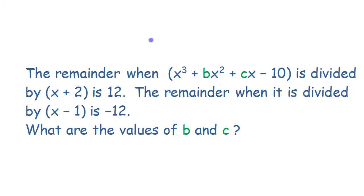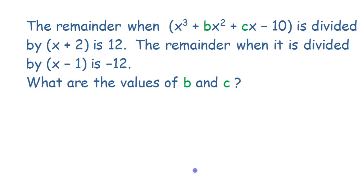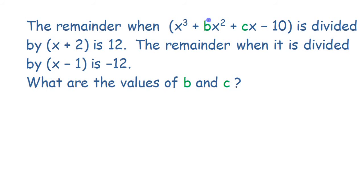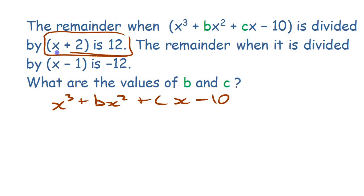Lastly, let's do a more difficult problem where you're working backwards. You're missing some coefficients in the original polynomial, but you're given the remainders for two different divisions. How can we find those two missing coefficients? Using the Remainder Theorem, you can write two equations — one for each division. If you have two equations and two unknowns, you can solve them together as a system. The polynomial is x cubed plus bx squared plus cx minus 10.